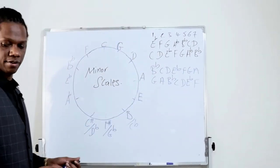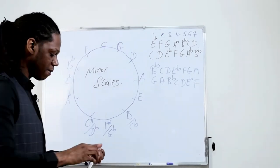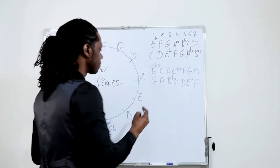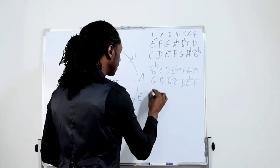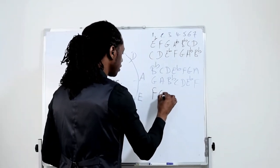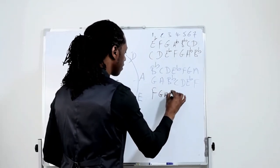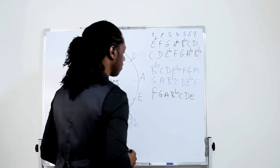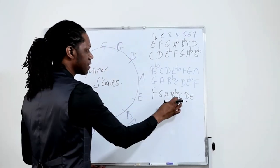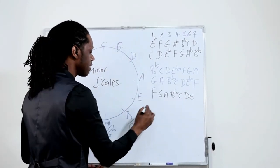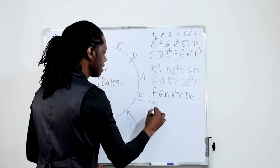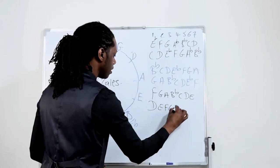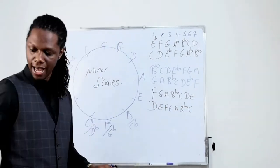How about F? F has one flat: F, G, A, B flat, C, D, E. We go to the sixth degree, which is D. So we have D, E, F, G, A, B flat, C. And that is your D minor.